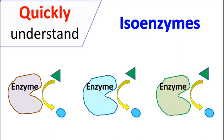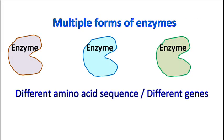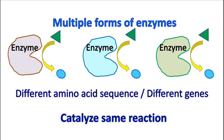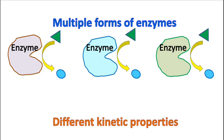Hey guys, QuikBiochemistry Basics here. Let's talk about Isoenzymes. Isoenzymes are multiple forms of an enzyme having different amino acid sequences or different genes, but they catalyze the same biochemical reaction. Because of slight variation in the gene sequence and amino acid sequence, these enzymes have different kinetic parameters such as different Km or Vmax values.